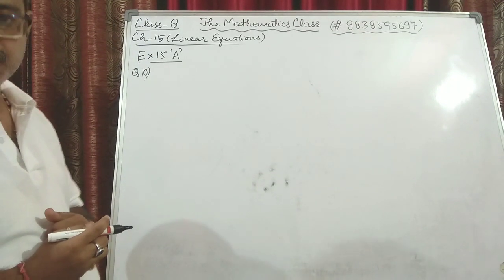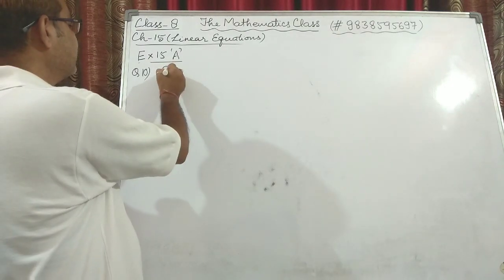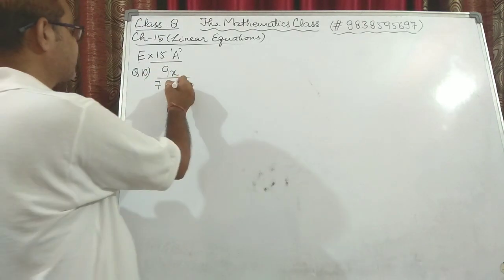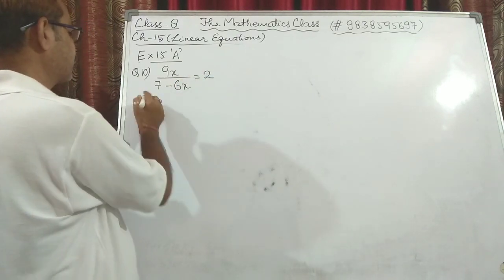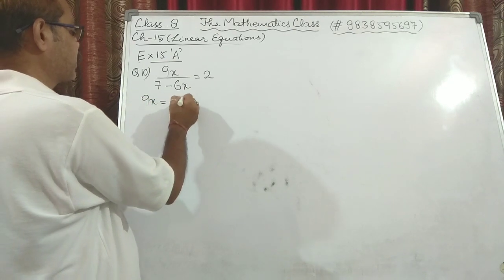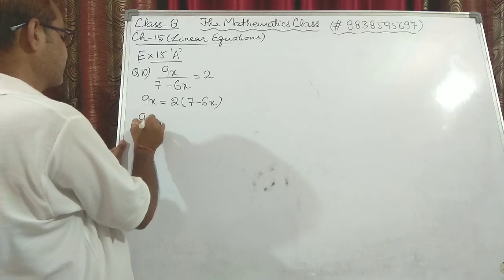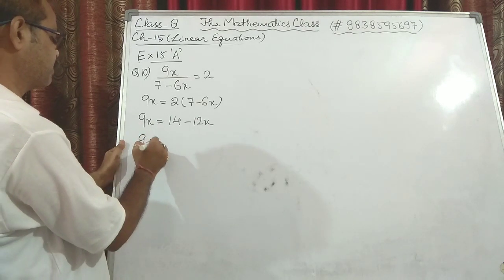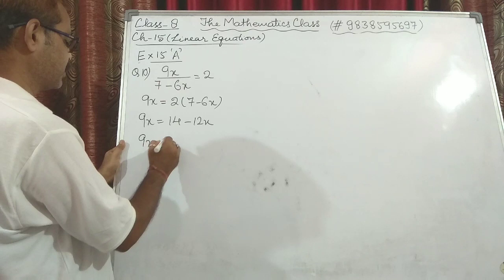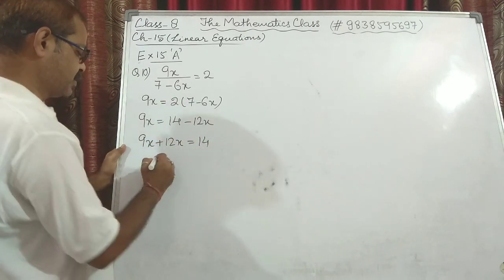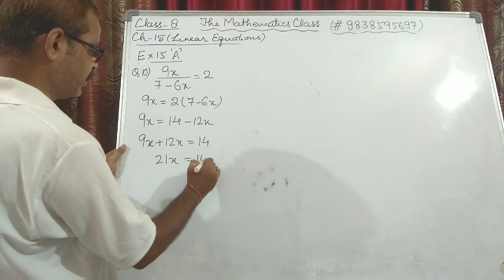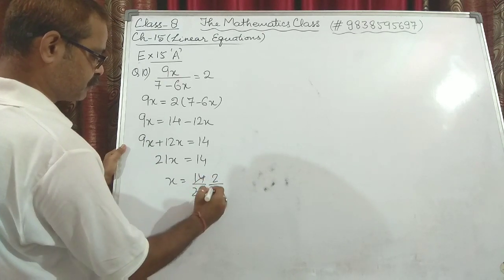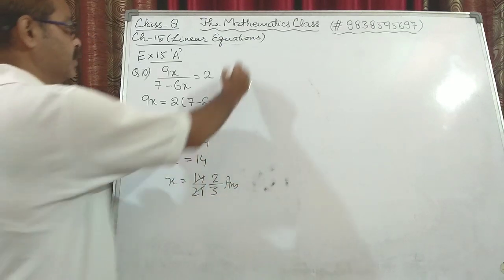Next is question number 10: 9x/(7 − 6x) = 2. Simply cross multiply: 9x = 2(7 − 6x) = 14 − 12x. Bringing 12x to the left: 9x + 12x = 14, so 21x = 14, giving x = 14/21. Both are divisible by 7, so x = 2/3. That is the final value.